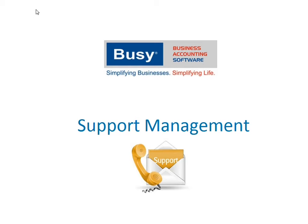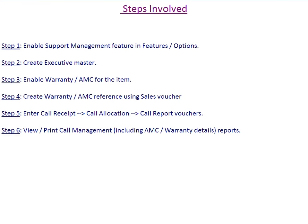This presentation will give an overview on implementing support management for the sales module in BUSY. Here are the steps in brief: Step 1, enable support management feature in features options. Step 2, create executive master. Step 3, enable warranty AMC for the item. Step 4, create warranty AMC reference using sales voucher. Step 5, enter call receipt, call allocation, and call report voucher.